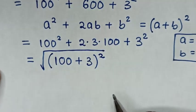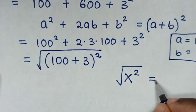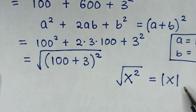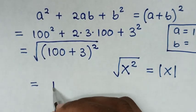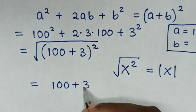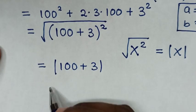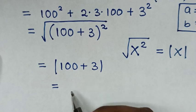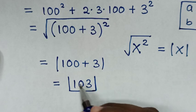Now this is in the form of x squared under square root, which is equal to x absolute, then it will be equal to (100 plus 3) absolute. But this is positive, so it will be equal to 100 plus 3 is 103. Therefore this is the correct answer.